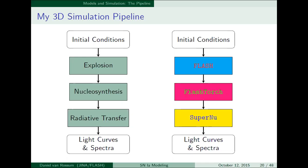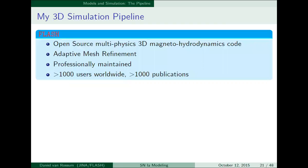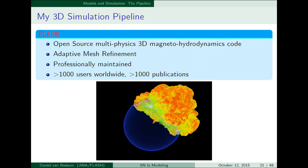Flash is a very well-known code — many of you might have heard about it. It's an open-source, multi-physics, 3D magnetohydrodynamics code. It uses adaptive mesh refinement on an Eulerian grid. It's professionally maintained, modularized, and has bells and whistles. There are over a thousand users worldwide and more than a thousand publications that use this code for science and research.